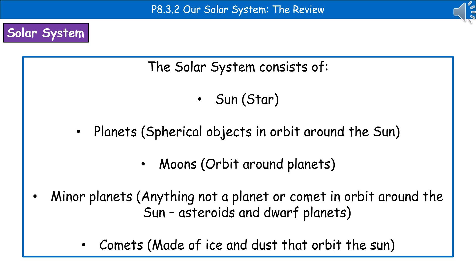Welcome to our review of the solar system. When we consider our solar system, it consists of the sun, which is a star; planets, which are the spherical objects in orbit around the sun; moons, which orbit around the planets; minor planets, which are anything not a planet or a comet in orbit around our sun — so these are made up of asteroids and dwarf planets — and then comets, which are made of ice and dust that orbit the sun.